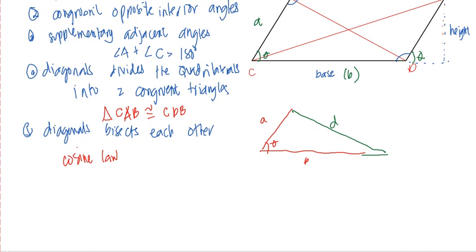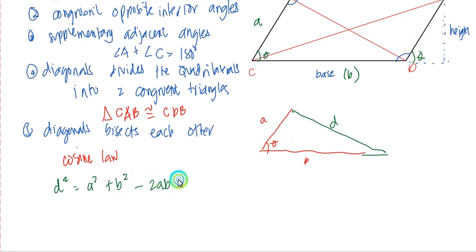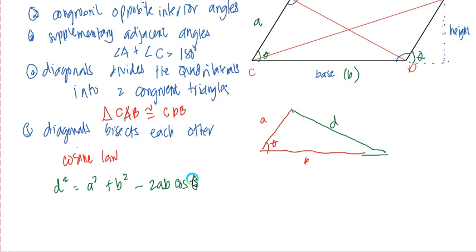Using the cosine law, if you are given an included angle between two sides and want to find the opposite side (the diagonal), apply D² = A² + B² − 2AB cos θ. There are also other parts of the parallelogram to consider: this right triangle formed by the side A, height h, and angle theta. If any two of these parts are given, the relationship among those values may be obtained from the right triangle.